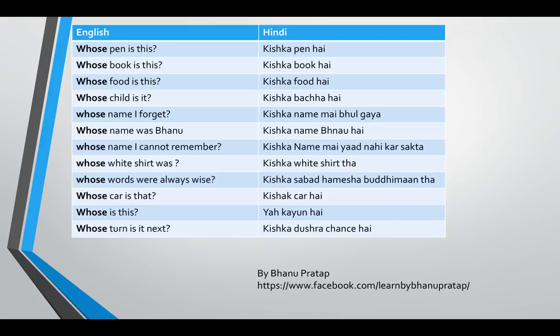Kiska name bhanu hai — whose name was Bhanu. Whose name I cannot remember — kiska name mein yaad nahi kar sakta. 'Remember' means 'yaad karna.' 'Cannot' means 'nahi' — I cannot do this means 'main nahi kar sakta.' Whose words were always wise — kiska sabd hamesha buddhiman tha. 'Wise' means 'buddhiman.'